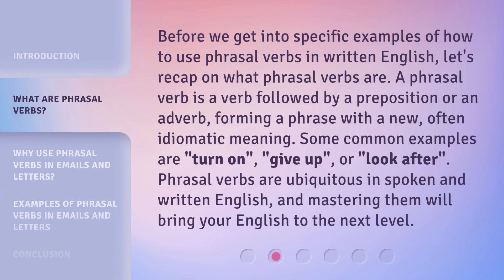Before we get into specific examples of how to use phrasal verbs in written English, let's recap on what phrasal verbs are. A phrasal verb is a verb followed by a preposition or an adverb, forming a phrase with a new, often idiomatic meaning. Some common examples are: turn on, give up, or look after. Phrasal verbs are ubiquitous in spoken and written English, and mastering them will bring your English to the next level.